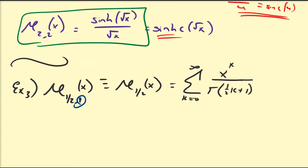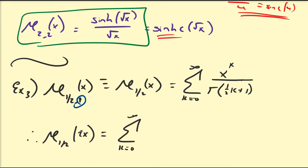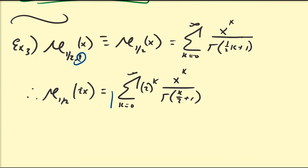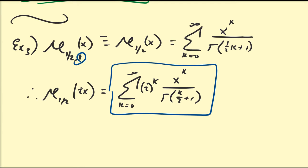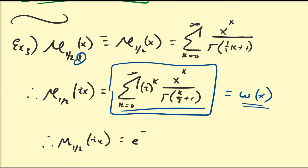This is a bit more interesting. If we replace x with ix in E_{1/2}(x), we get the sum from k=0 to infinity of i^k · x^k over Gamma(k/2 + 1). This power series is precisely the Faddeeva function w(x), and we know its error function representation. So E_{1/2}(ix) = e^{-x²} · erfc(-ix).